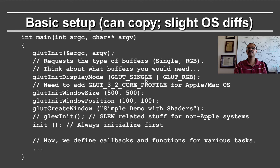In this case, we will have GLUT single buffer, which means we just have the front buffer. And GLUT RGB says that the front buffer is just a color buffer with red, green, and blue. I will omit this GLUT32 core profile, which is required for Apple and Mac OS to run modern OpenGL. You init a window, you set it at the correct position, you create the window with the appropriate title. On Windows and Linux systems, you need this glew init, which just gets certain functions and wrappers initialized. Finally, we initialize the program.